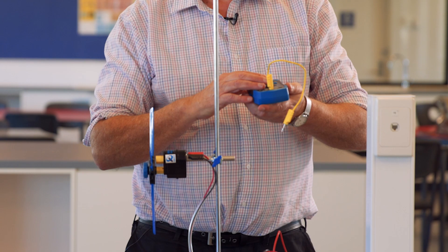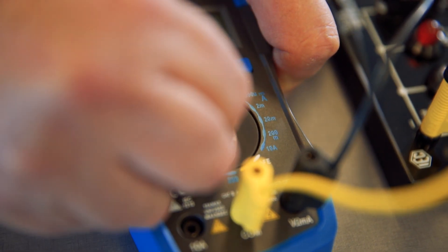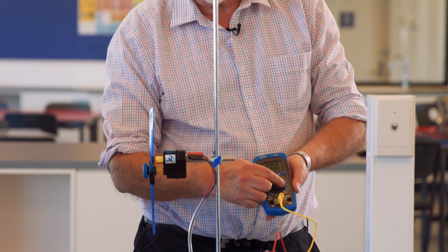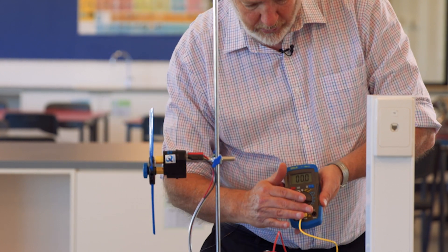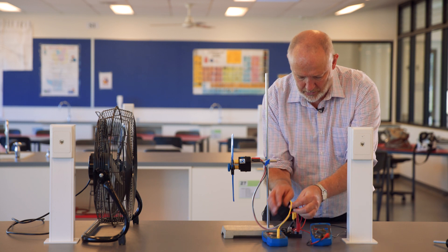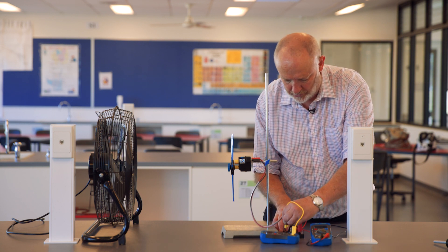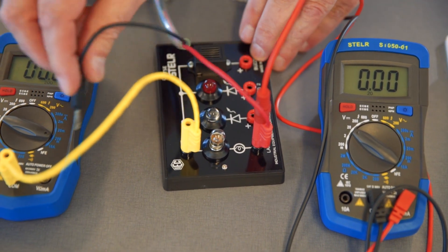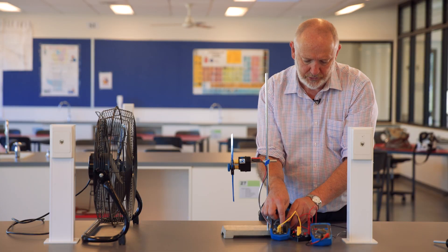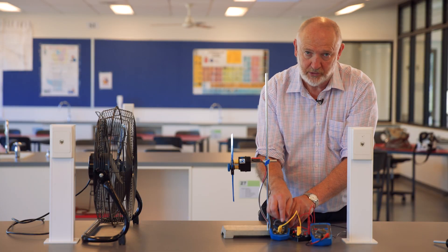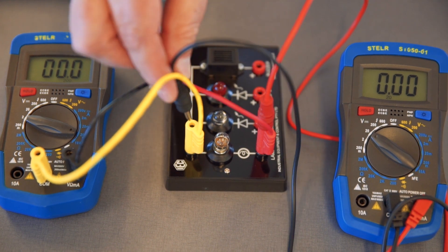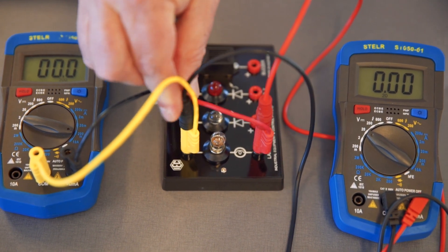We'll bring in another multimeter here and I'm going to turn this one to the 200 milliamp scale. So I'm going to go from the common of this one into the other side of the light bulb, and we're going to go from the turbine into the volts, milliamps, and ohms socket. I've got those two running there and I need to reconnect my voltmeter across those.